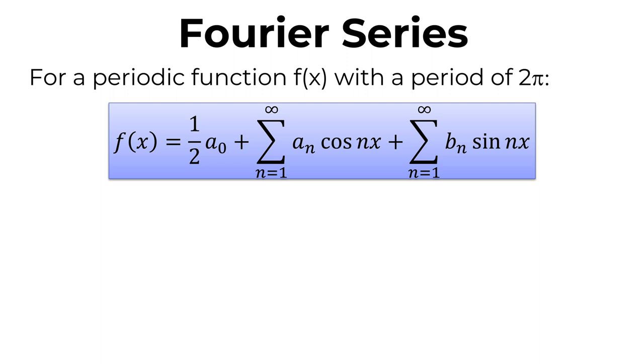A Fourier series of periodic function fx is an infinite sum of sine and cosine functions, meaning that the periodic function fx can be described by the infinite series of sine and cosine functions. If the period of given function fx is 2 pi, Fourier series can be 1 half of a0, which is a constant, and an infinite sum of sine and cosine functions.